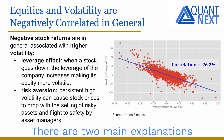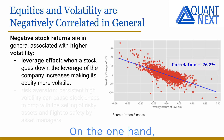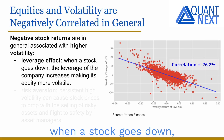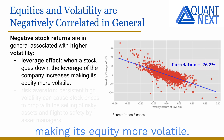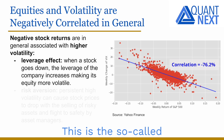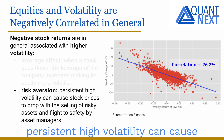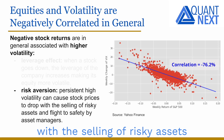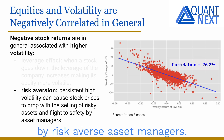There are two main explanations for this in the literature. On the one hand, when a stock goes down, the leverage of the company increases, making its equity more volatile — this is the so-called leverage effect. On the other hand, persistent high volatility can cause stock prices to drop with the selling of risky assets and flight to safety by risk-averse asset managers.